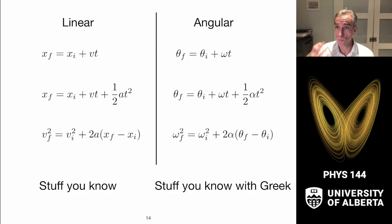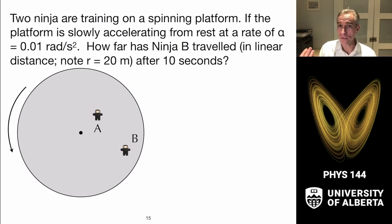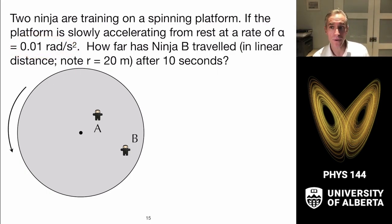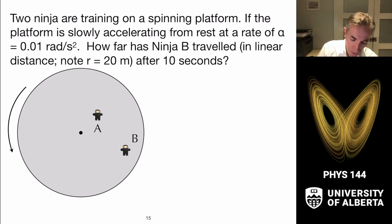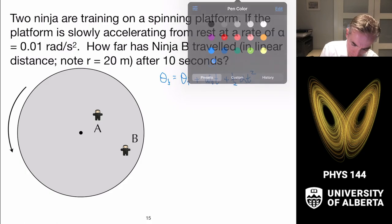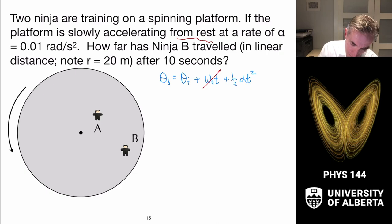Let's get practical. Consider a top-down view of two ninja on a spinning platform — part of ninja training. If the platform is slowly accelerating from rest at alpha equals 0.01 rad per second squared, I want to know how far Ninja B has traveled in linear distance after 10 seconds. This is a constant angular acceleration problem, so I'll figure out theta final given theta initial.